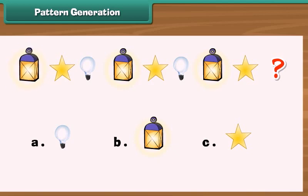First, the lantern, then the star, and then the bulb. The given pattern ends with a star. So the next object must be the bulb. So, A is the correct option.